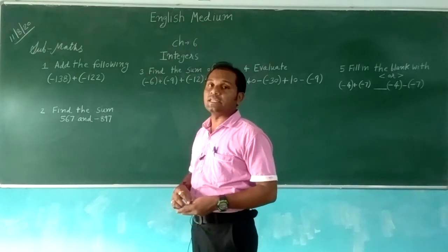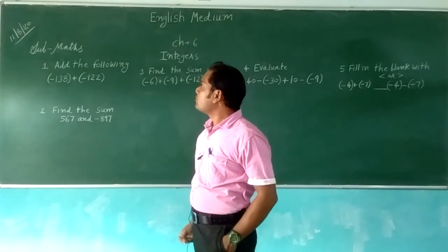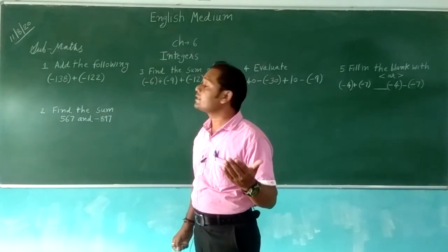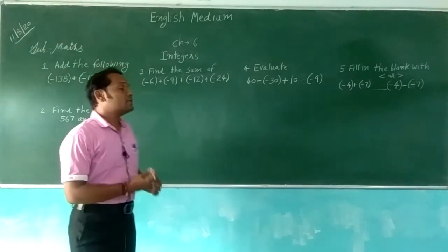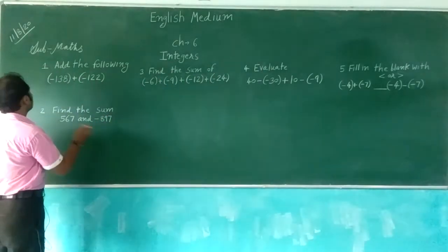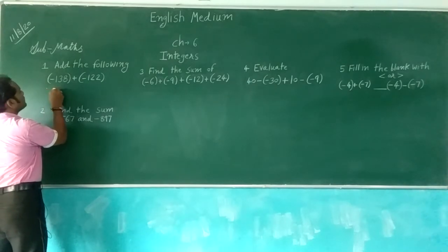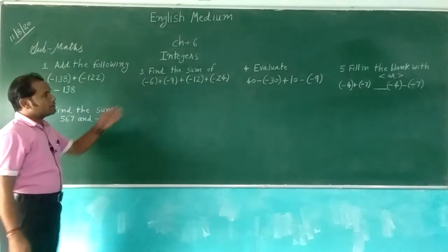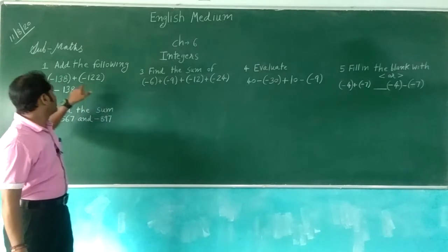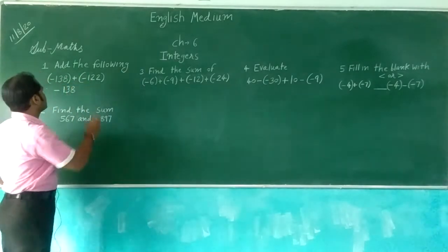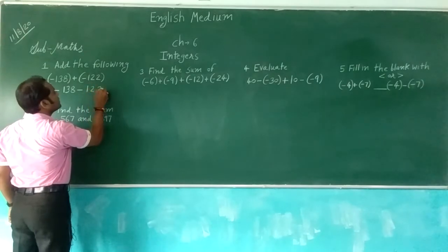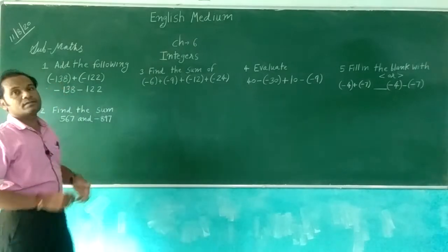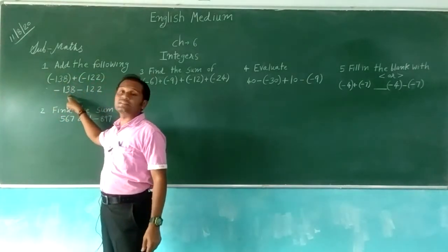Same rules you need to apply here. We have minus 138, plus minus 122. So how do we add that? We will see: minus 138, and here this rule will apply — plus minus gives minus — so minus 122.